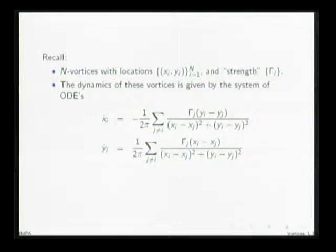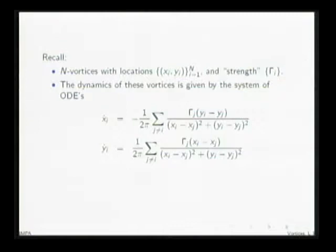We've seen these equations a number of times already. These are the ordinary differential equations that describe the motion of n point vortices in an inviscid fluid. We assign to each vortex its strength, gamma i, and then the location of the center of the vortex moves according to this system of differential equations.